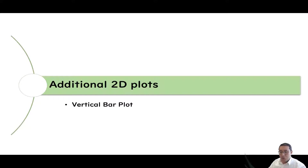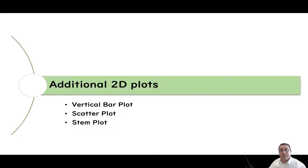The first one is the vertical bar plot, the second one is the scatter plot, the third one is the stem plot, and the fourth one is the pie plot.